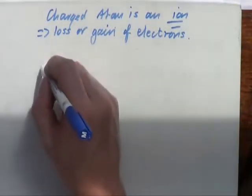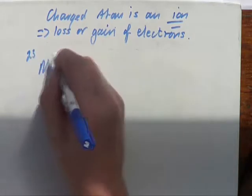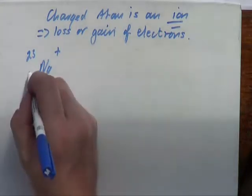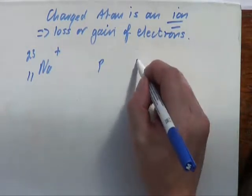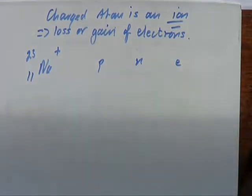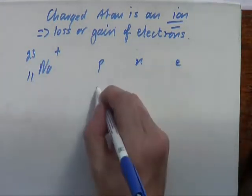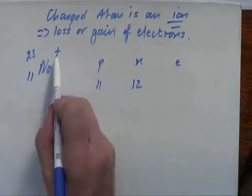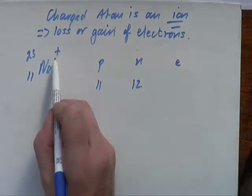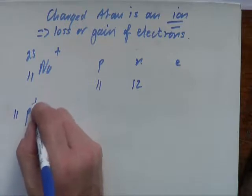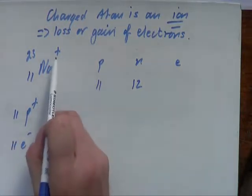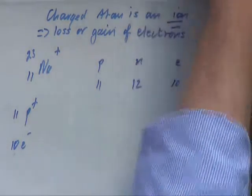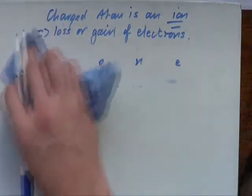Let's do a couple of positive ions. Take sodium, 23, with a +1 charge. Go to the periodic table — atomic number is 11. Protons are 11, neutrons are 23 minus 11 which is 12. For electrons — it's plus one, which means it must have one more positive than negative. It started with 11 protons and 11 electrons, so it must have lost an electron, bringing it down to ten electrons.